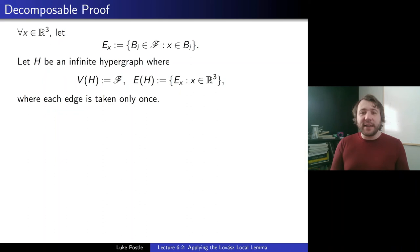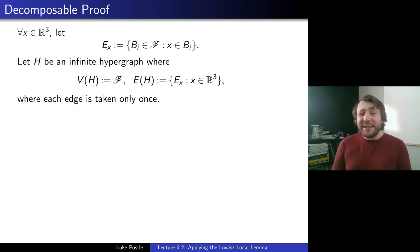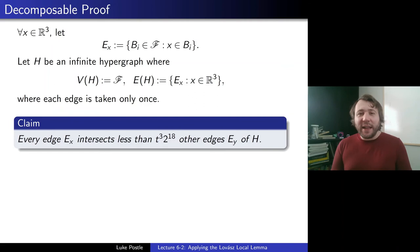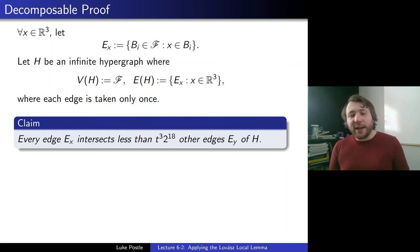Each point becomes an edge on the balls it's in, and the vertices are the balls. An important point: we're going to take each edge only once — we make it a simple hypergraph. Two points may be in the same set of balls, so we take that edge only once. Given that, we claim that once we simplify it, every edge Ex intersects fewer than t³·2^18 other edges Ey of H.